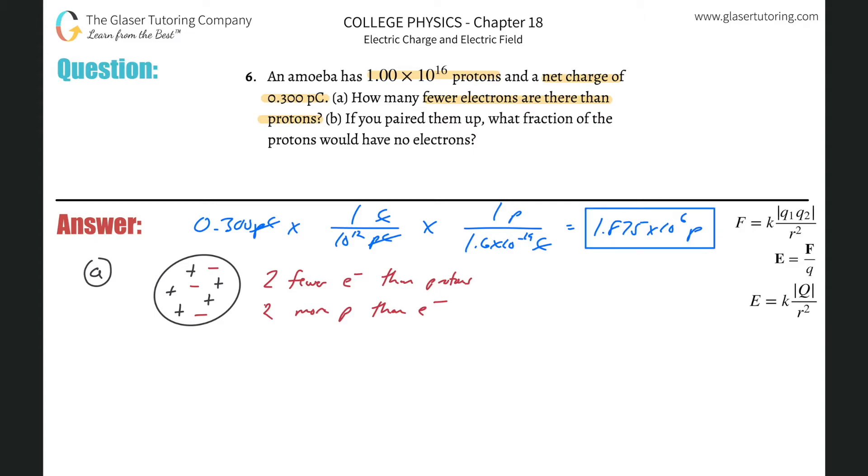And if that's the number of excess protons, then how many fewer electrons are there? It's the same magnitude, right? There's 1.875 times 10 to the 6th fewer electrons than protons. All right. So that should take care of that.